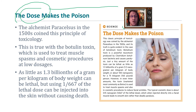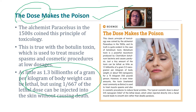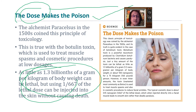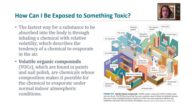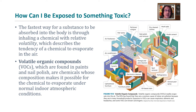We look at the body's ability to deal with toxins through systems like the cytochrome P450 system and liver function. Body weight is a major factor: the dose of a toxin that can harm a child is much less than what would harm an adult. Probably the fastest route of absorption into the body is through the lungs, followed by the digestive system, then the skin, and also eye surfaces.